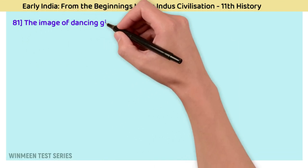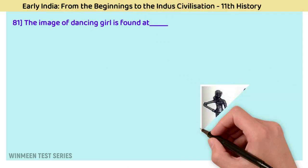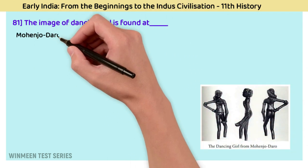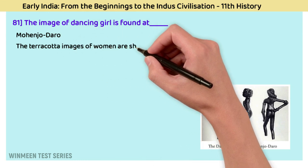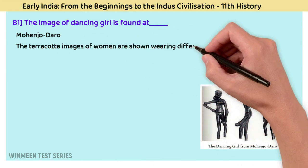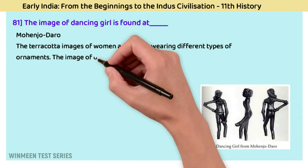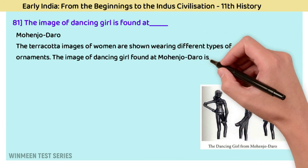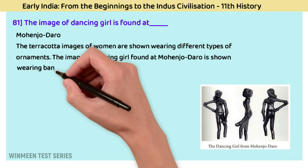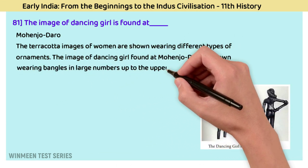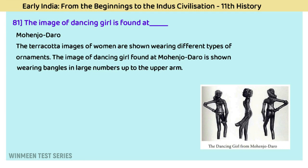Question 81: The image of the dancing girl is found at? The answer is Mohenjo-daro. Terracotta images of women are shown wearing different types of ornaments. The image of the dancing girl found at Mohenjo-daro is shown wearing bangles in large numbers up to the upper arm.